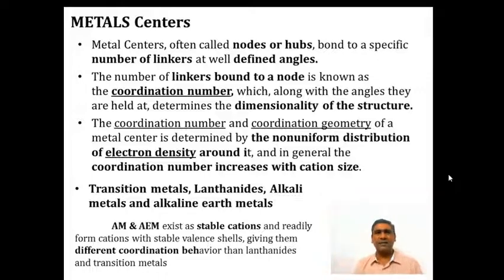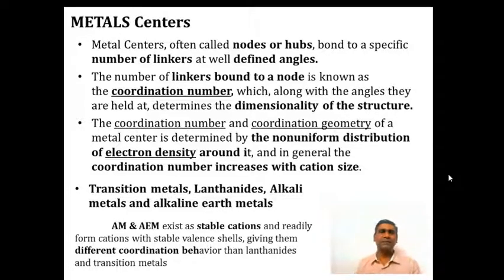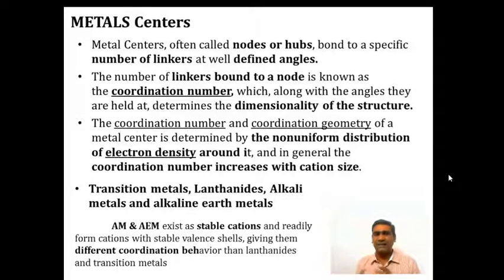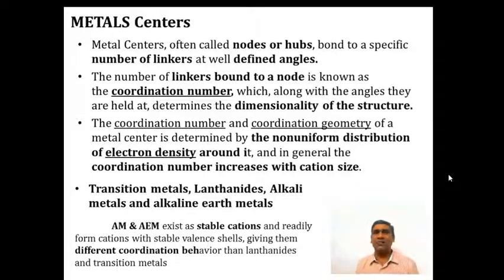Metal centers are often called nodes or hubs, bound to a specific number of linkers — organic molecules — at well-defined angles, since pyrazine, bipyridine and pyridine all have different structures and different bond angles. The number of linkers bound to a node is known as the coordination number, which along with the angles determines the dimensionality of the structure — whether one-, two- or three-dimensional. In general, the coordination number increases with the cation size.